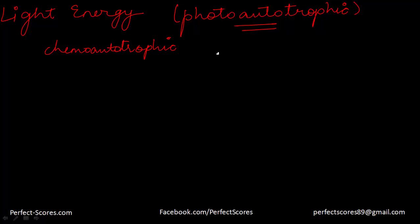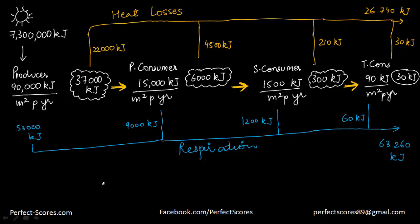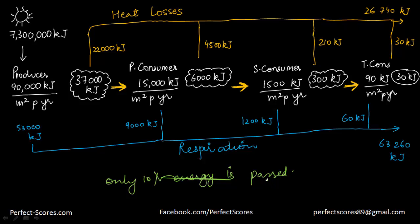Let us summarize the flow of energy in a food chain. Only 10% of the energy is transferred to the next level, and because 90% of the energy is lost, the number of trophic levels is limited. The Sun supplies 7,300,000 kilojoules of energy. Producers need 90,000 kilojoules per meter squared per year, out of which 53,000 kilojoules are lost due to respiration, so only 37,000 kilojoules are transferred to the next trophic level.